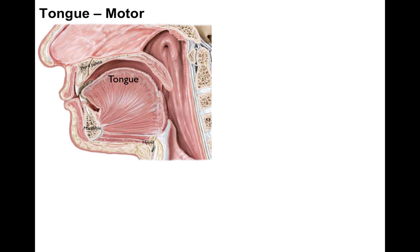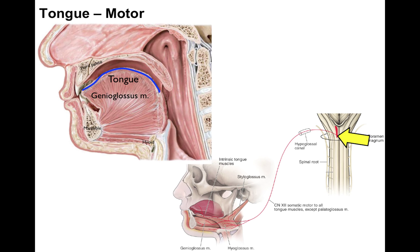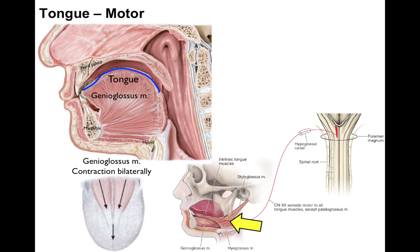Now motor innervation of the tongue. There's our tongue — blue represents the epithelium on top for taste and general sensation. And there's our genioglossus muscle. It gets its name because it attaches at the chin — genio — and goes into the tongue, and it's going to move your tongue. The hypoglossal nucleus, where the hypoglossal nerve arises in the medulla, goes to the hypoglossal canal, courses through the submandibular triangle, and innervates all those tongue muscles. The genioglossus is interesting — look at those two arrows showing the vector pull and contraction of genioglossus, which pulls your tongue right out of the mouth.